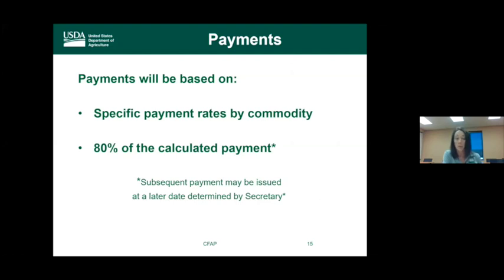Payments are based on specific payment rates by commodity and will be paid at 80% of the calculated payment. Subsequent payments may be issued at a later date if funding is available. This program is not first-come, first-served — the 80% rate ensures all eligible producers receive payments. After sign-up ends, the secretary will review whether the payment percentage can increase from 80% up to 100%.